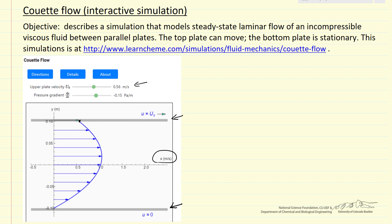The thing to keep in mind about this simulation is we're looking at laminar flow at steady state. This is a viscous liquid. We'll now look at how, as we change the velocity and the pressure gradient, this velocity profile changes.